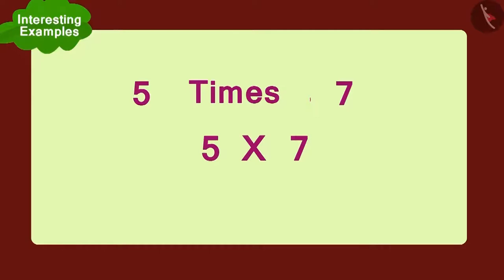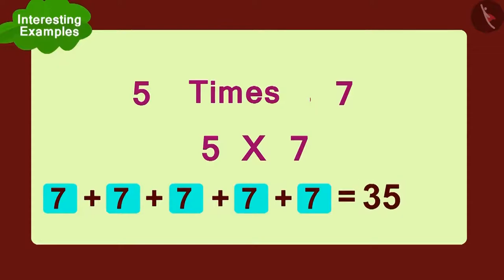Now, how will we do this by using the method of addition? Seven added to seven, again add seven, again add seven, and finally add one more seven. So, what is the total number of flowers? Thirty-five flowers.